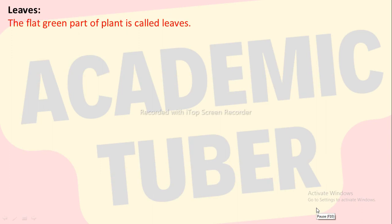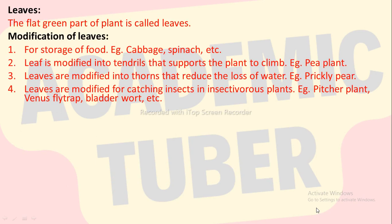Leaves. The flat green part of a plant is called leaves. Modification of leaves: leaves of plants are modified for storage of food, for example cabbage, spinach, etc. Leaves are modified into tendrils that support the plants to climb, for example pea plant. Leaves are modified into thorns that reduce the loss of water, for example prickly pear. Leaves are modified for catching insects in insectivorous plants, for example pitcher plant, Venus flytrap, bladderwort, etc.